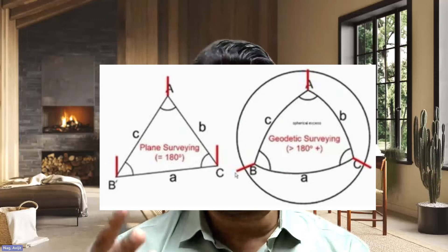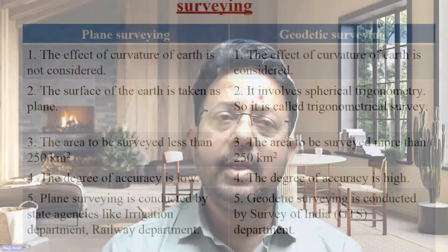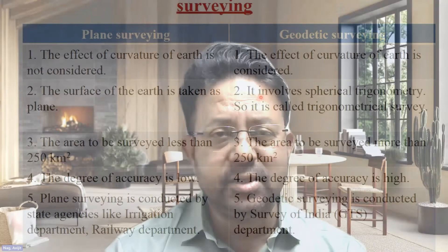So where is geodetic surveying used? When you want to map a very large region or establish precise location or ground control points. Next is plane surveying. In plane surveying, the curvature of the earth is not taken into account and the earth is considered as a plane. Plane surveying is suitable for areas less than 250 square kilometres, and any lines joining two points on the surface are considered as straight lines. This is the most common type of survey that we do every day.